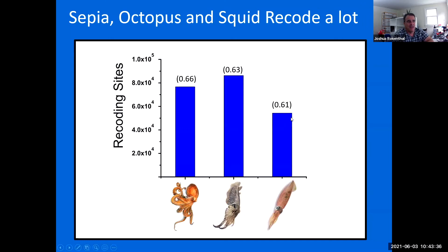And again, in octopus, cuttlefish, or squid, in each case, about two thirds of the neural transcriptome, the messages in the neural transcriptome have at least one editing site, recoding editing site in them.